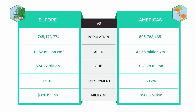In today's tutorial I'm going to show you how to do a comparison table. In this example I have given the comparison Europe versus America, and the factors I've used are population, area, GDP, employment percentage, and the military.